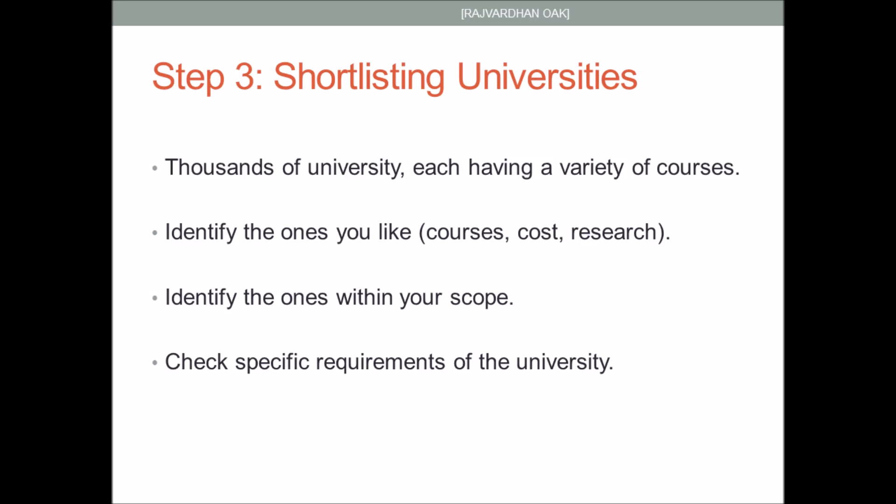The next step is to shortlist the universities you want to apply to. There are thousands of universities, each with a number of programs and many different courses. To identify the right university, you must go through the various programs and courses. You must also know which universities are within your scope, as some may have specific requirements like a particular GRE score or TOEFL speaking section score. Based on factors such as courses offered, faculty, and cost of study, you should shortlist accordingly.